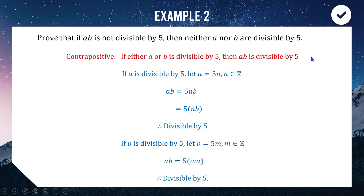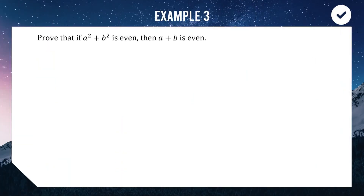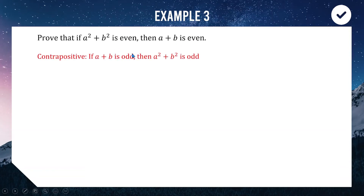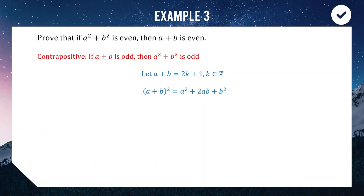For our third example: if a² + b² is even, then a + b is even. Once again the first part is more complex, so reversing the direction with a contrapositive makes the process easier. The negation of a + b being even is a + b is odd; the negation of our first half is a² + b² is odd. So we start with a + b being odd, meaning a + b = 2k + 1 for some integer k.